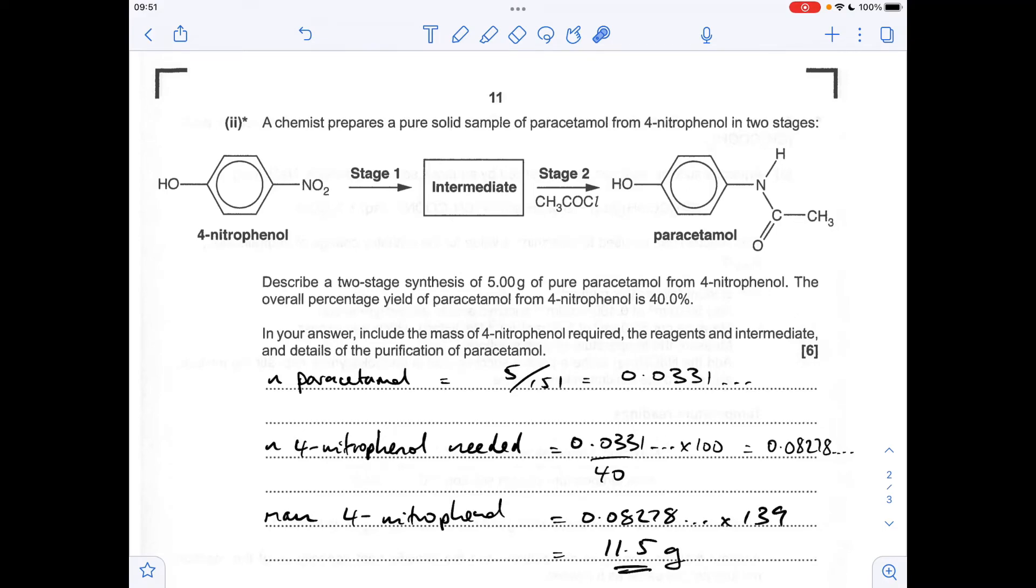So moving on to the structure of the intermediate now, to generate paracetamol, we need a group here that will react with this ethanoyl chloride to generate this amide group. And the group in question is an amino group. So we need to turn the NO2 group into an NH2 group. And that's going to be 4-aminophenol.